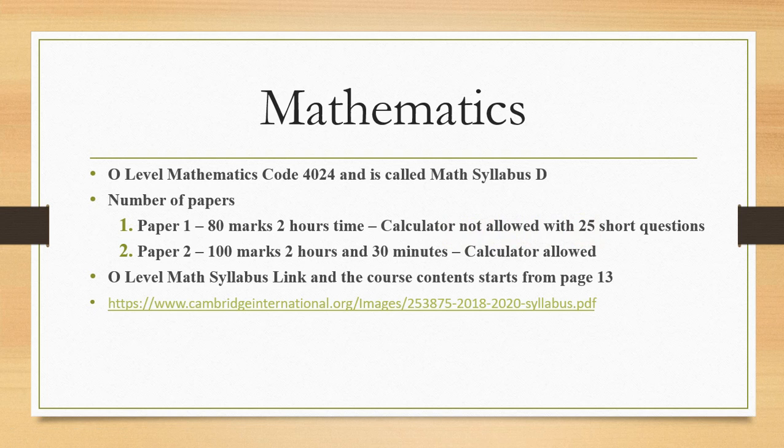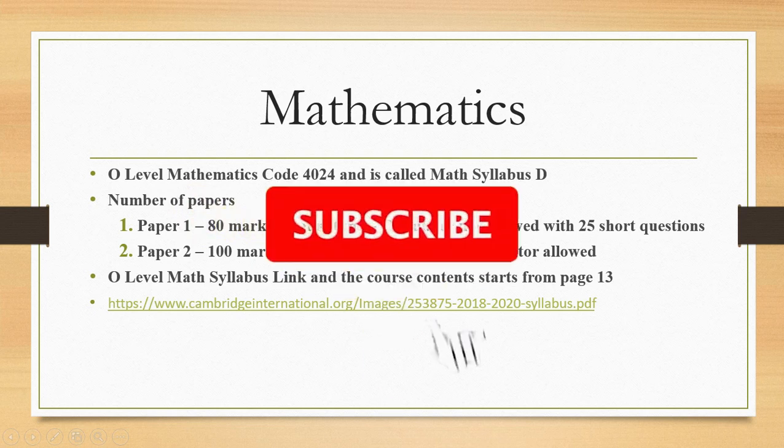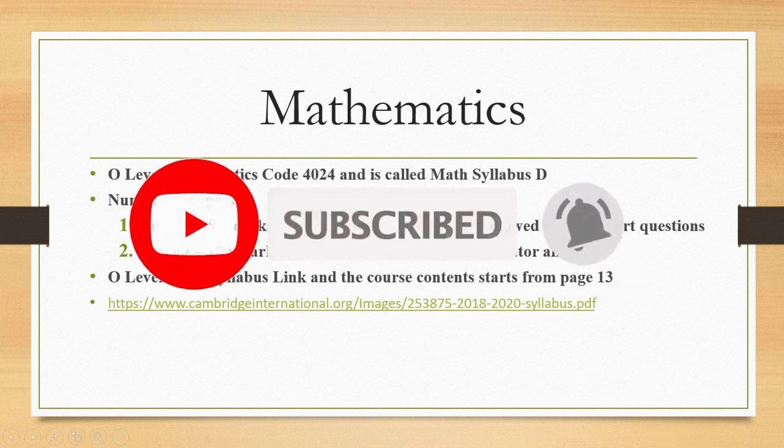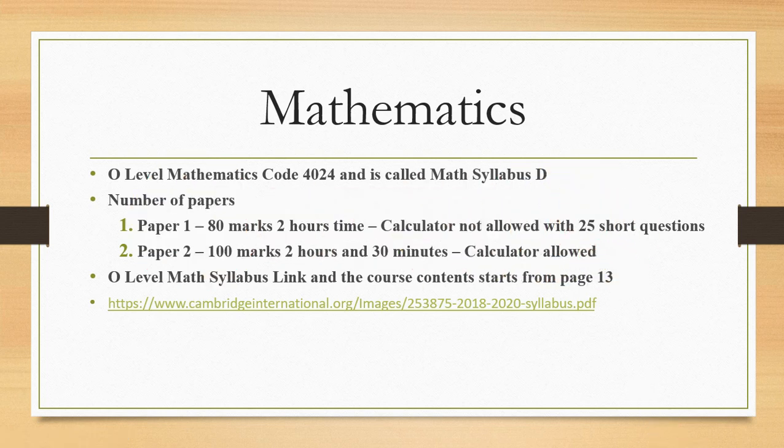Students mostly use calculators even for small multiplication and division, so here the CIE will not allow calculator in this paper of 80 marks. If you do not have basic skills of mathematics, you need to practice these basic skills to avoid calculator use. If you are habitual, most students use calculator even for two times three equals six.